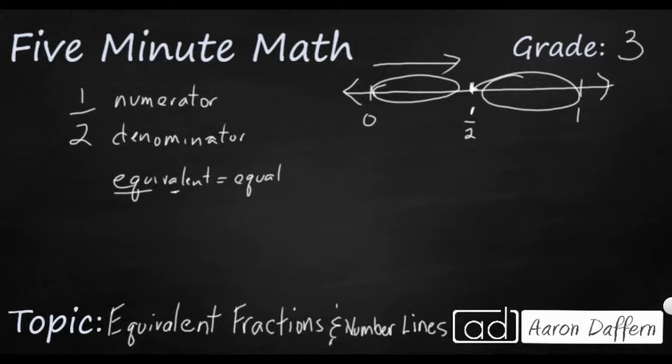If I were to move all the way over here to the second tick mark, that would be two-halves. One is the same as two-halves. Now, how can I generate an equivalent fraction?